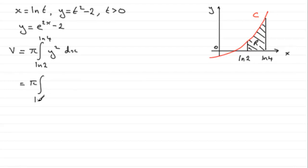So again we've got our integral going between the natural log of 2 and the natural log of 4, and when we square y we're going to have e to the 2x minus 2 all squared integrated with respect to x.